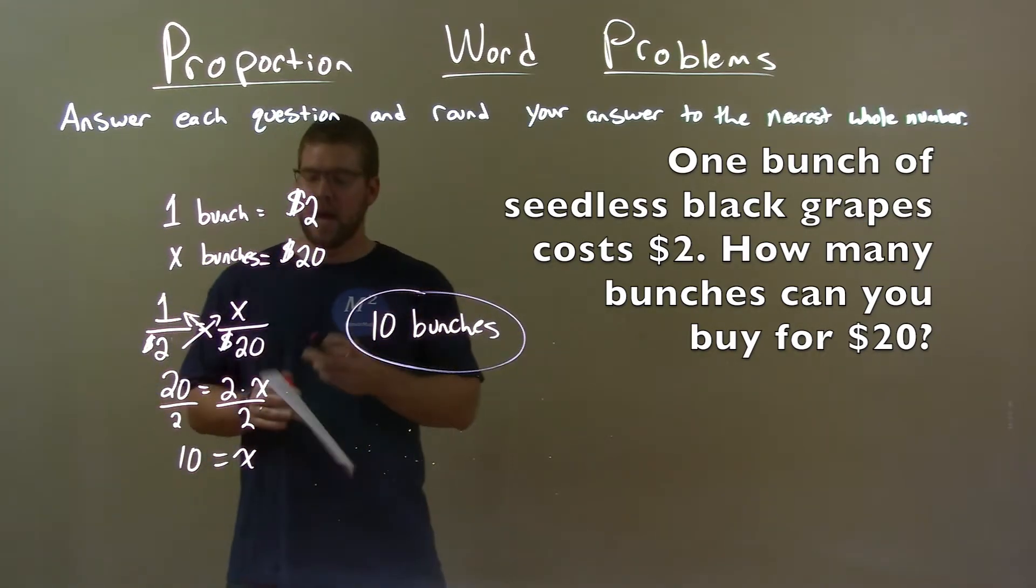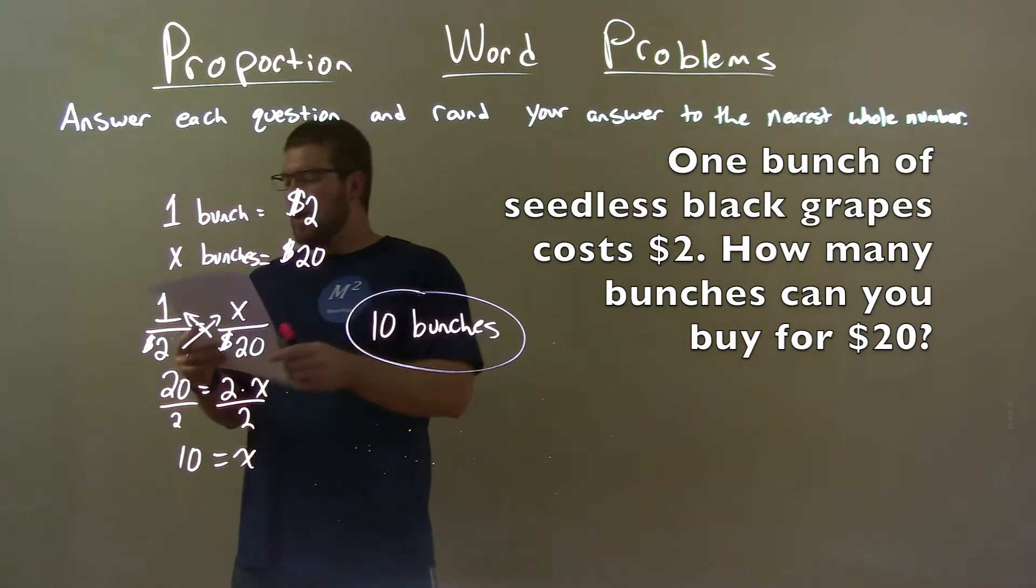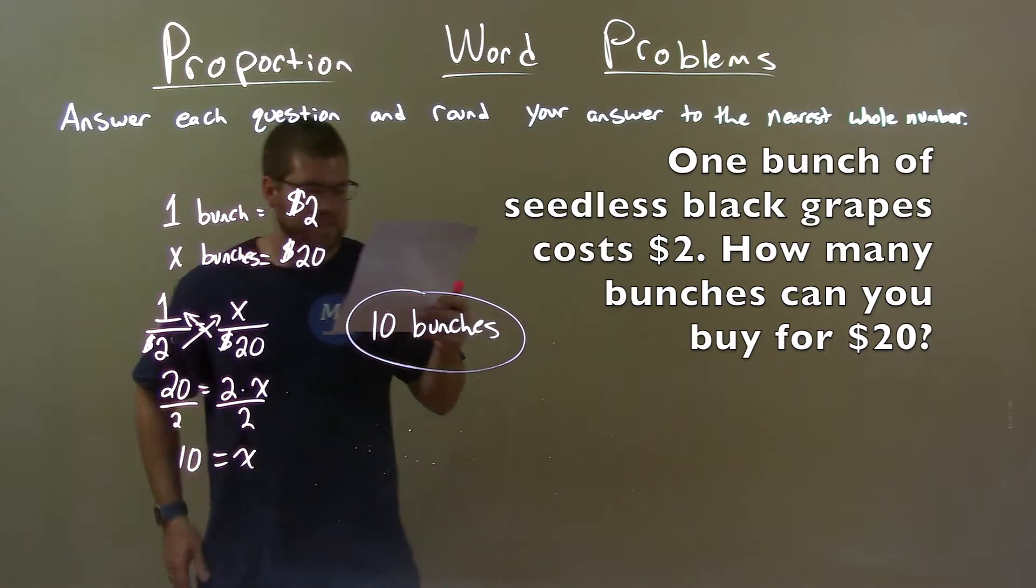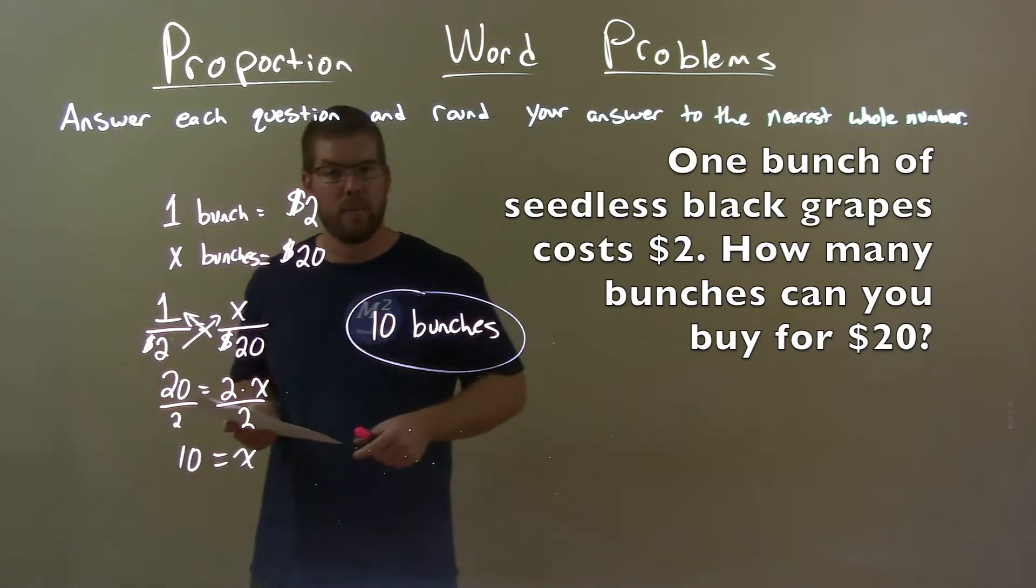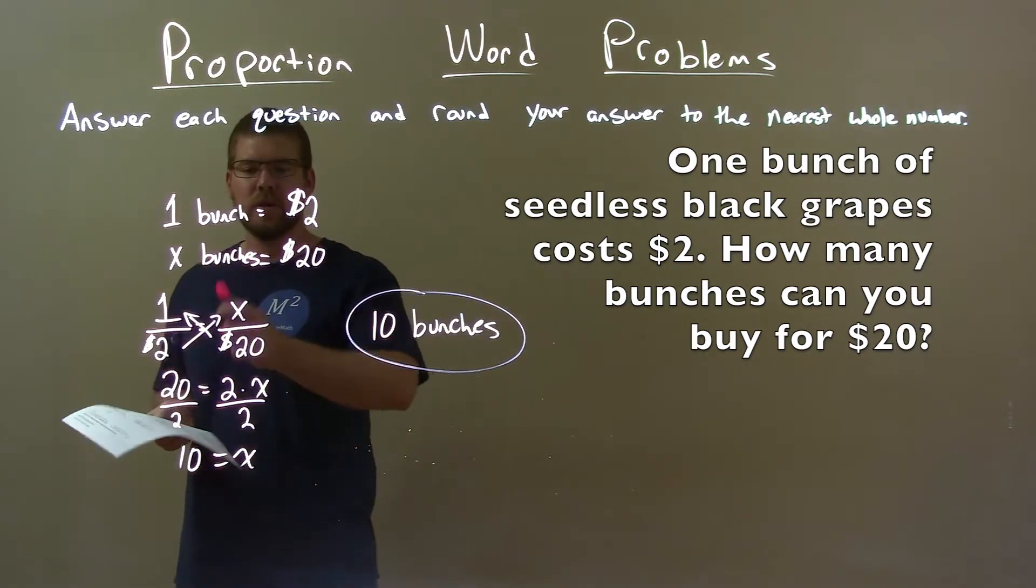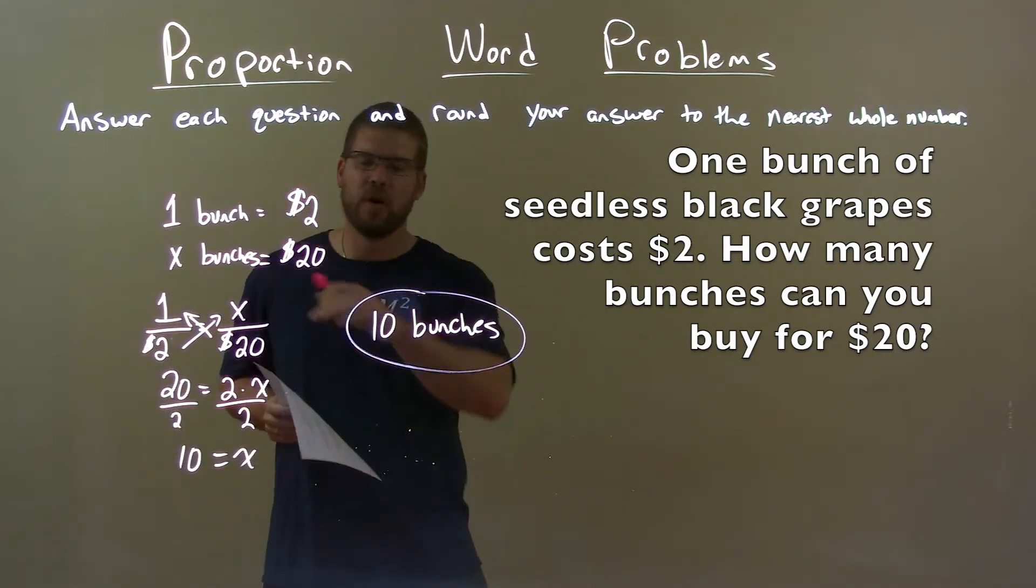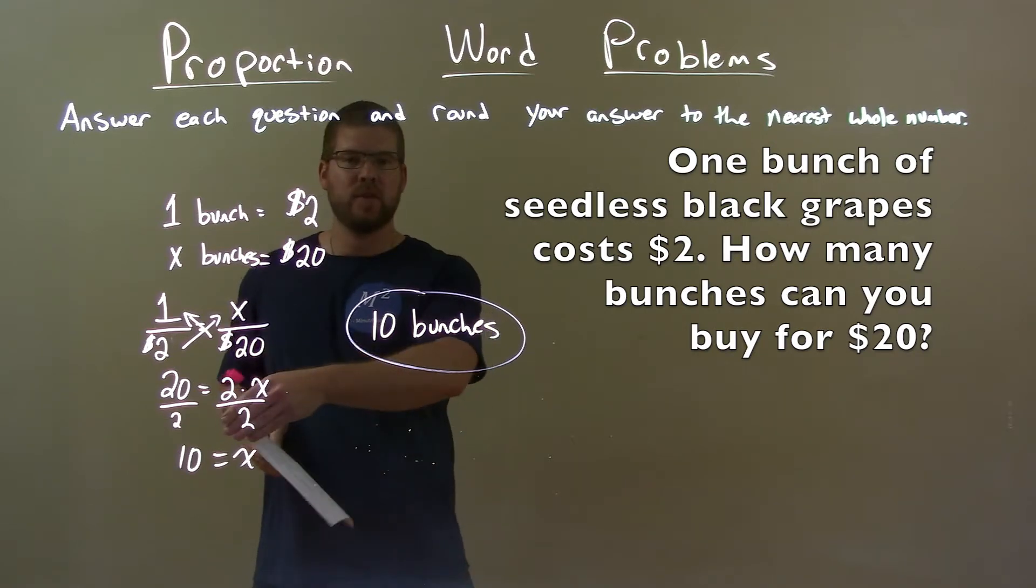So, quick recap. We're given the question: One bunch of seedless black grapes costs $2. How many bunches can you buy for $20? We set up a proportion, 1 over 2 equals x over 20. Then we solve for x. We got x equals 10.